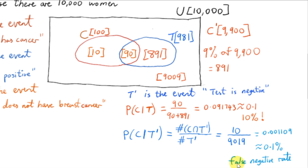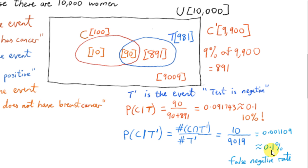This number is known as the false negative rate — the test gives a false result. The event T' has occurred, so the woman is told the test is negative (she does not have breast cancer), but 0.1% of the time that will be false — about one in a thousand.